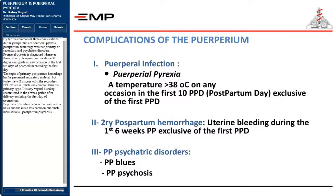Puerperal pyrexia is diagnosed whenever there is a body temperature rise above 38 degrees centigrade on any occasion in the first 10 days of puerperium, excluding the first day. Secondary PPH, which is much less common than the primary type, is any vaginal bleeding encountered in the six-week period after delivery, excluding the first day of puerperium. Psychiatric disorders include postpartum blues and the much less common but much more serious postpartum psychosis.